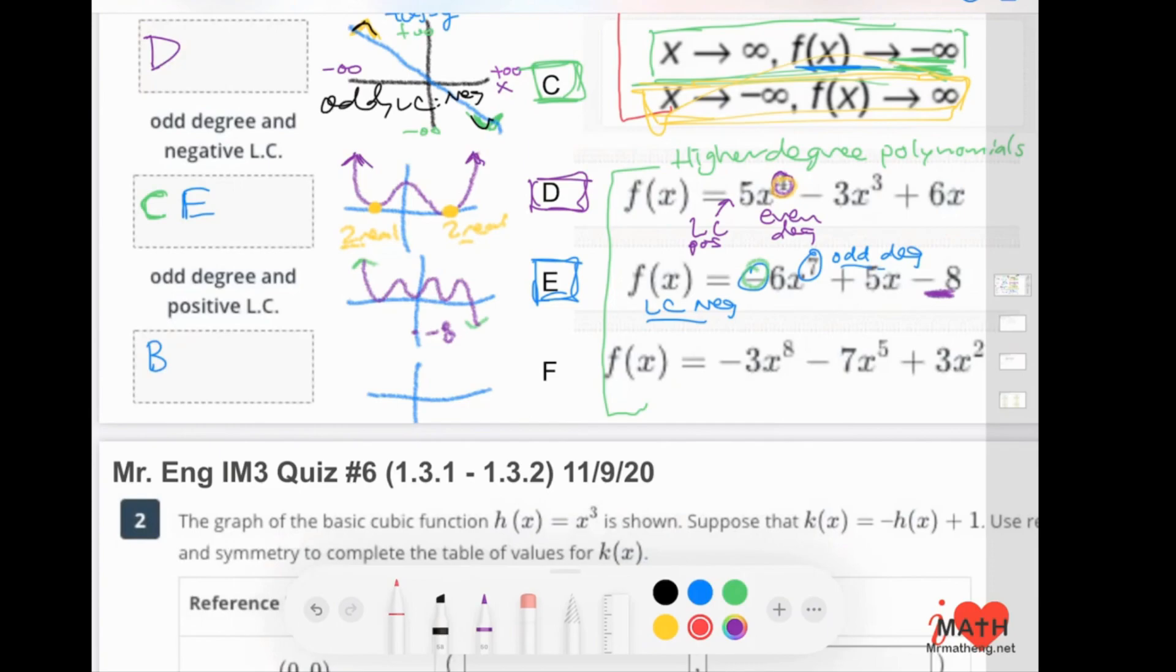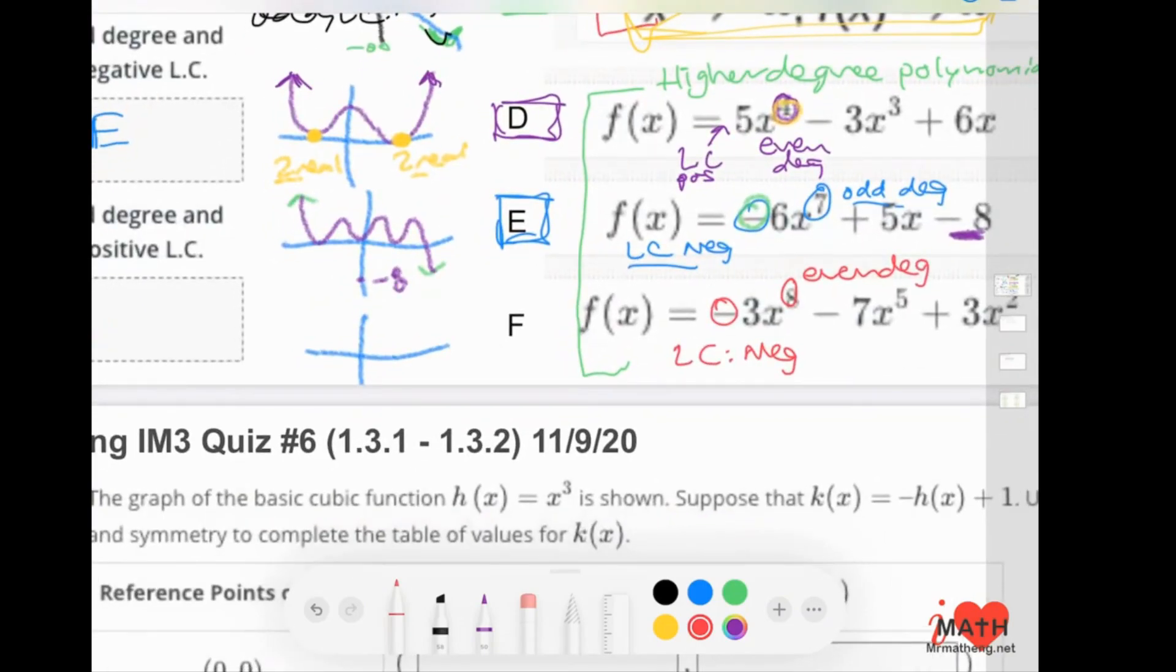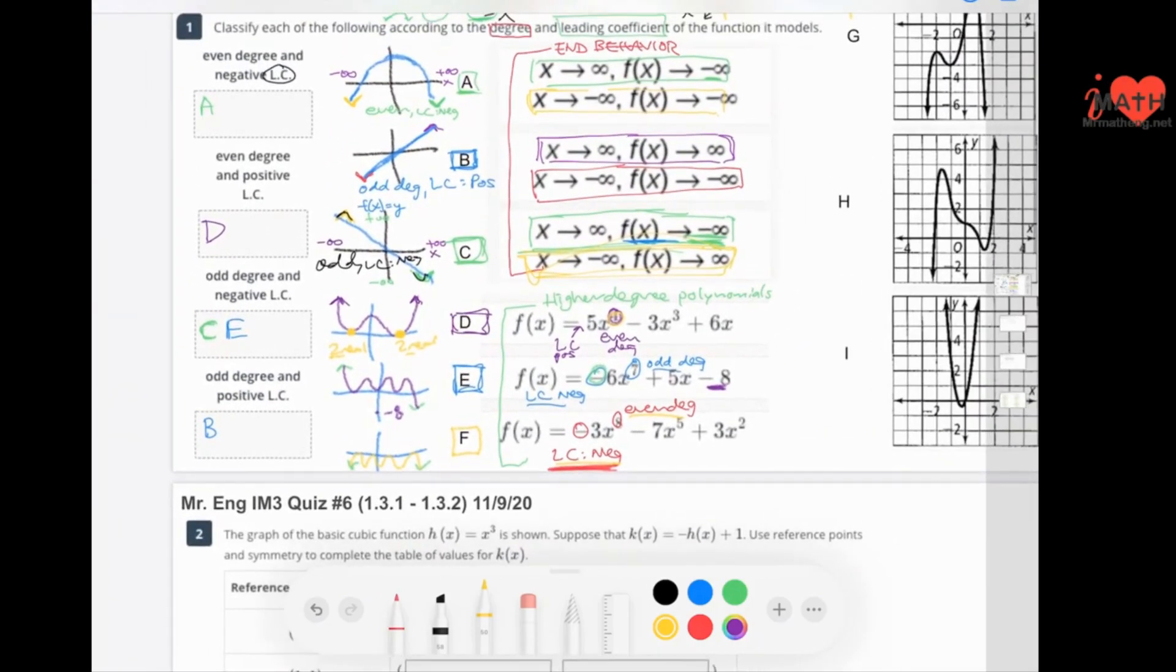Let's go through this one. Even degree. A negative leading coefficient. So evens are normally like this. But because it is negative, it's going to go down. And you can erase these. And then if you want to draw a graph: one, two, three, four, five, six, seven, eight. That's what my graph would look like. So F would be again, negative and even. That would be up here. F.